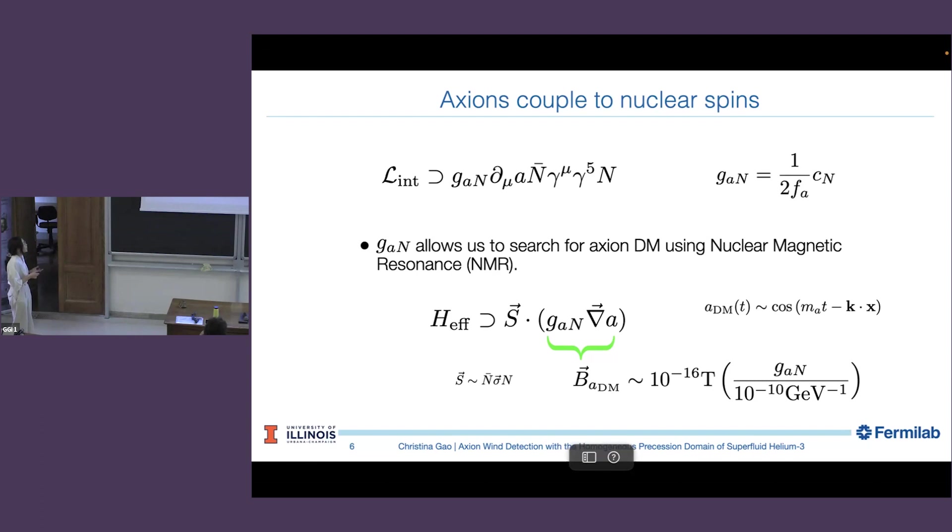However, there is the gradient term of the axion, which is proportional to the axion field itself, the axion velocity. The gamma I is secretly a sigma matrix. So this gradient field actually couples to the spin of the nucleon. If you write the low-energy effective Hamiltonian, S is roughly the spin of the nucleon. And this term, GAN times gradient of A, acts as an effective magnetic field induced by the dark matter axion.